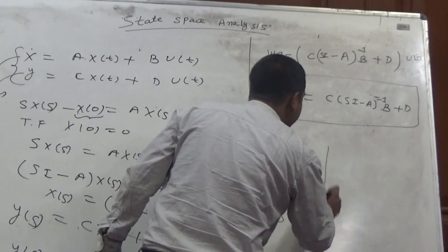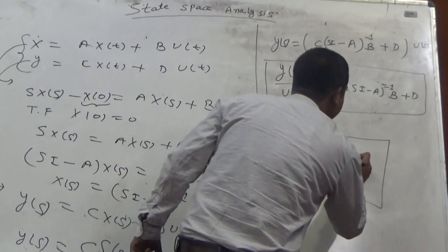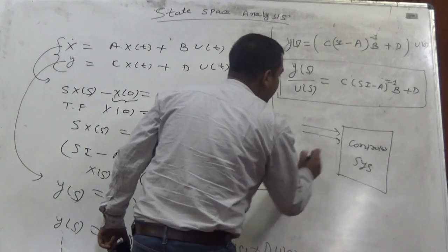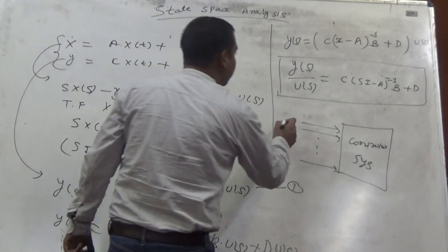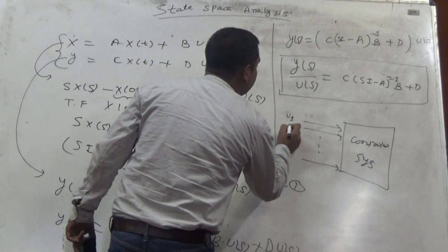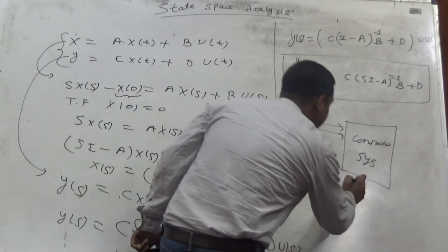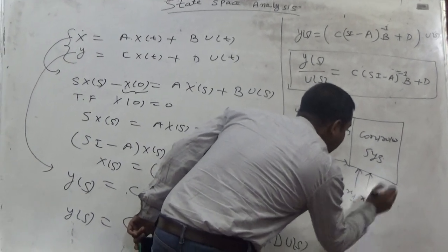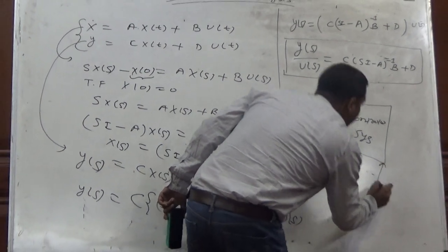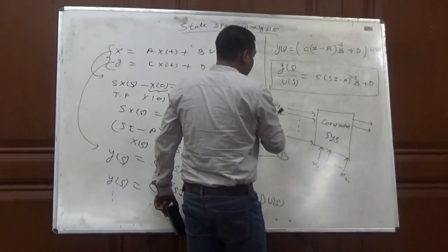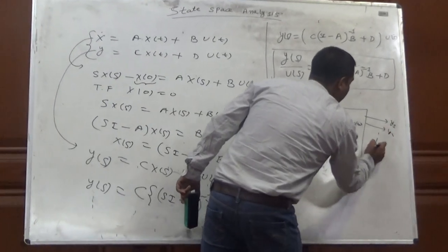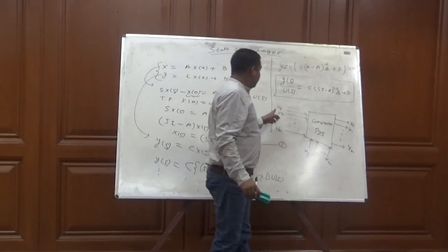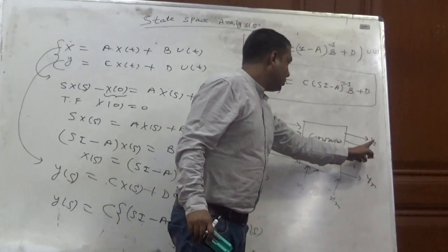In state-space representation, we have a control system with multi-input multi-output capability. We have N number of inputs — for example, U1, U2 through Un — and state variables X1 through Xn, giving a multi-variable system. The outputs are Y1, Y2 through Yn. This is the representation of state-space, where the input is U, the state variable is X, and the output is Y.